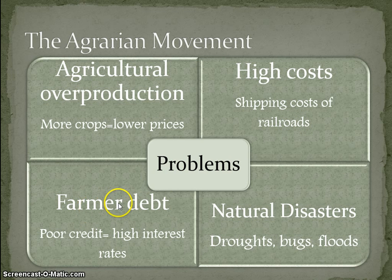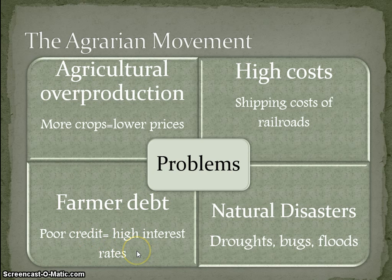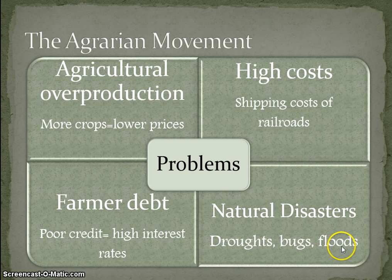Because they can't pay their farms, they're going to have more debt. The more debt you have, the poorer credit you have and a higher interest rate on loans. And of course, the environment isn't going to help — you have natural disasters including droughts, bugs, and floods. When you have all these things together, it's very difficult for the farmers to make a living off of their agriculture.